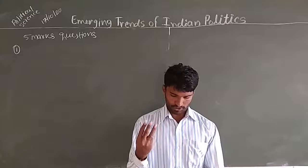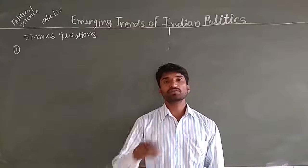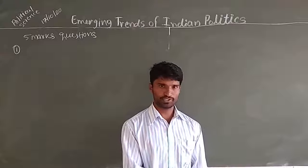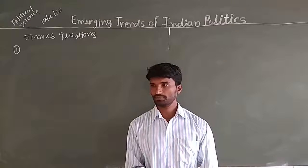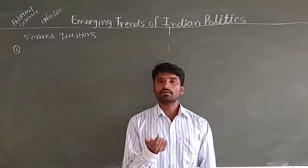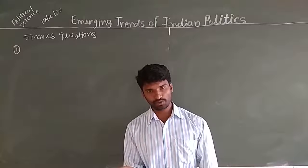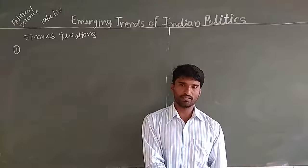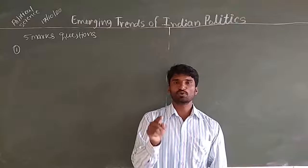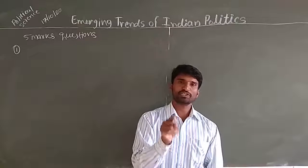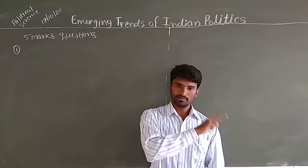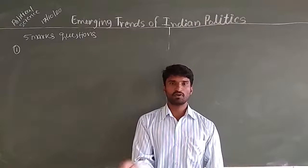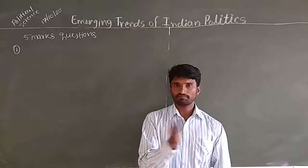Third question: merits of coalition government. First, we have to explain what is coalition. When no single party gets an absolute majority, a number of political parties come together to form a government — that is known as a coalition. A coalition can be formed through a pre-election alliance or after the election also.